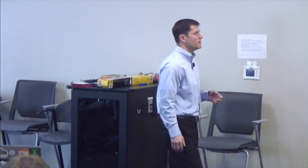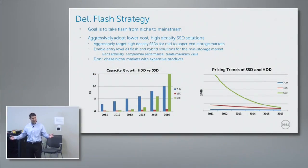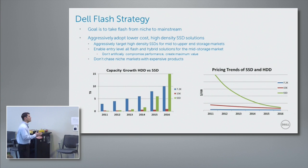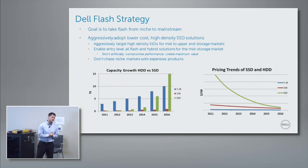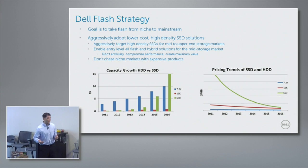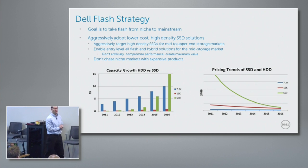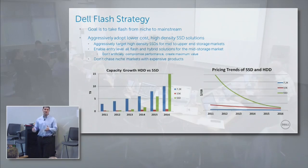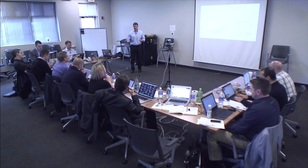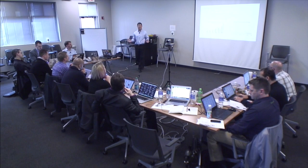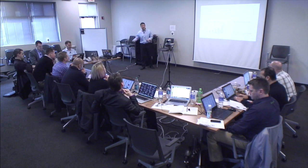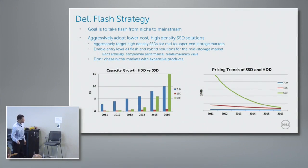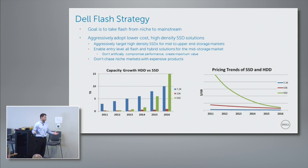What is our strategy for Dell? The first one is to take flash mainstream. We're doing that in two ways. We are adopting higher density and lower cost solutions — really meaning MLC. We were the first major storage array vendor to offer 1.6 terabyte read-intensive drives. We call them read-intensive and write-intensive rather than MLC/TLC/SLC, because the technology is moving so quickly we didn't want to shift that terminology on our customers every six months.